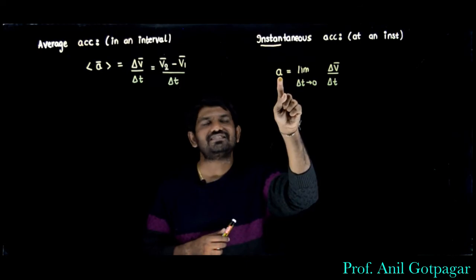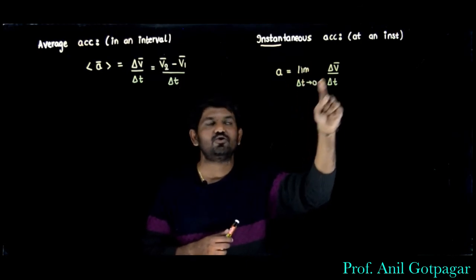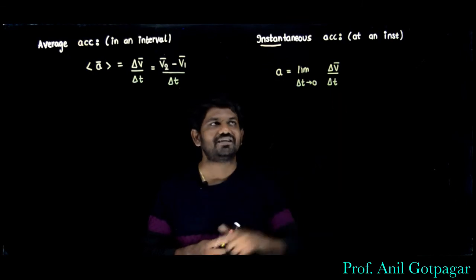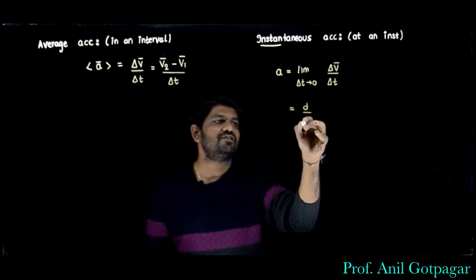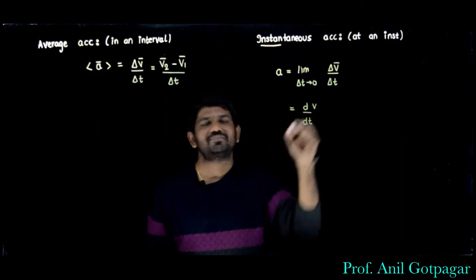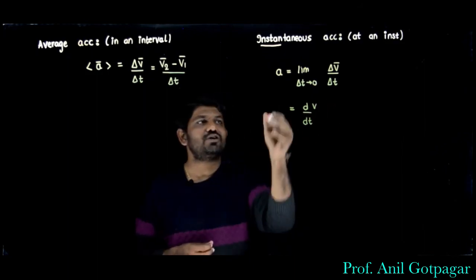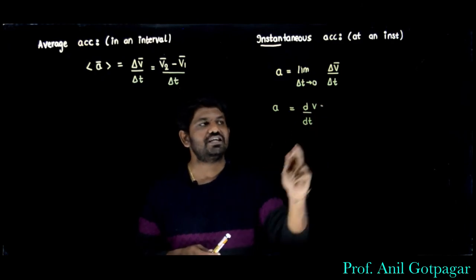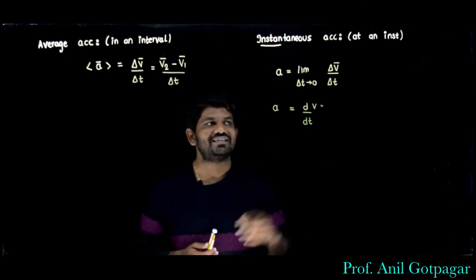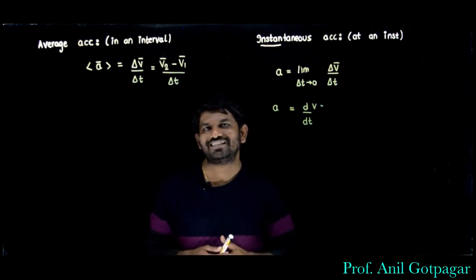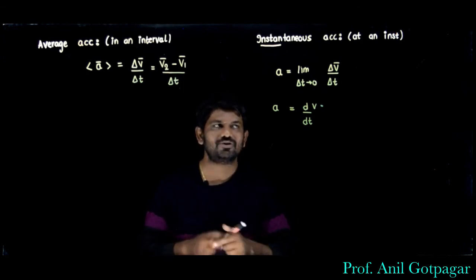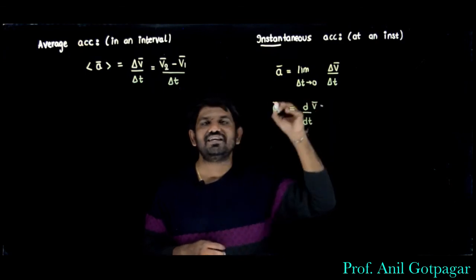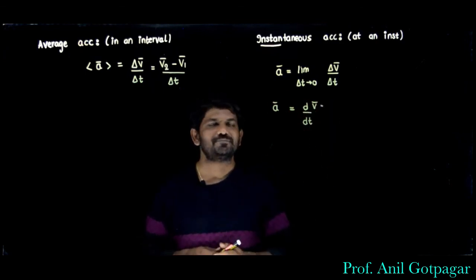So instantaneous acceleration is the limit as delta t tends to 0 of delta v bar upon delta t — change in velocity upon time. This is nothing but the derivative of velocity with respect to time, i.e., the rate of change of velocity. So instantaneous acceleration is the derivative of velocity with respect to time.